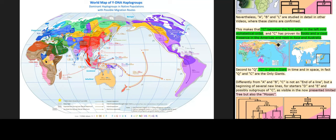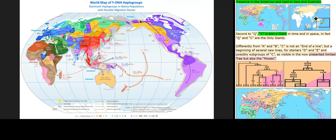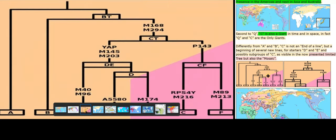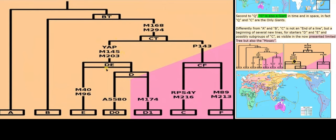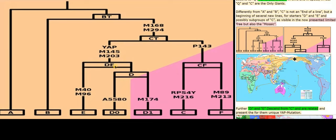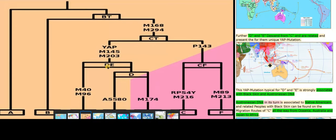This makes C the first letter in the leftover alphabetical order, and C has proven its roots in a clear presence in the Americas and next in Asia and Australia. Second to Q, C is also a giant in time and in space — in fact Q and C are the only giants. Differently from A and B, C is not an end of a line but a beginning of several new lines — for starters D and E and possibly subgroups of C, as visible in the now presented limited tree, but also the mosaic. Further, D and E descend from C and are related, presenting the unique YAP mutation. This YAP mutation typical for D and E is strongly associated with black skin and Austronesian DNA. Austronesian DNA in its turn is associated with Native Americans, and related peoples with black skin can be found on the migration routes of C all the way from Oceania, Australia and Japan to Africa.